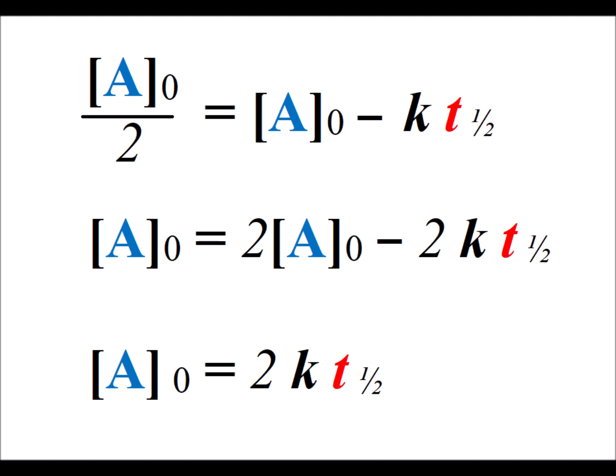So after making our substitution, we get that [A]₀ divided by 2 is equal to [A]₀ minus k times t₁/₂.